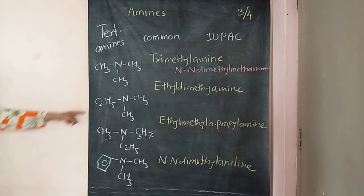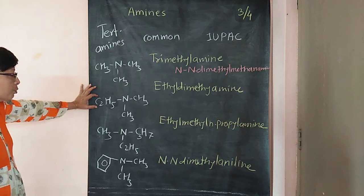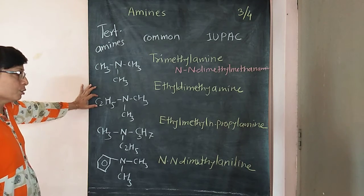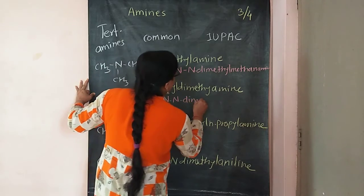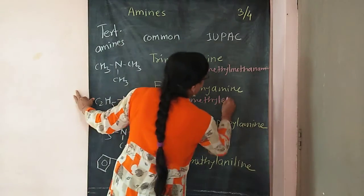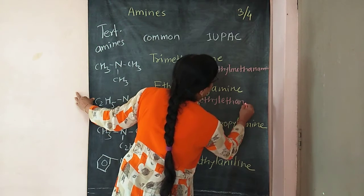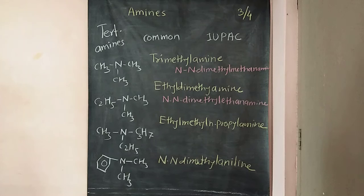The next member has two methyl groups but the larger group is ethyl. So we choose ethyl as the parent chain. The remaining two methyl groups are attached to nitrogen. The name becomes N,N-dimethylethanamine.